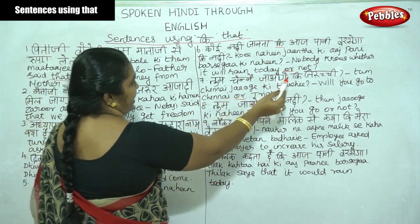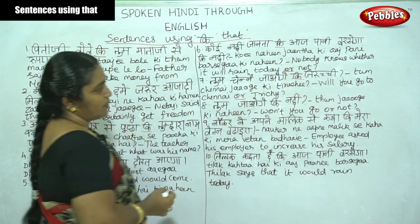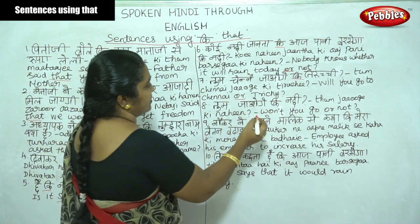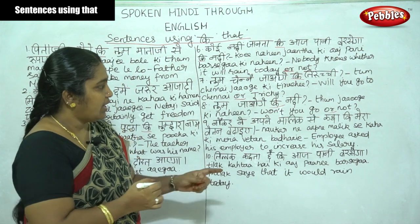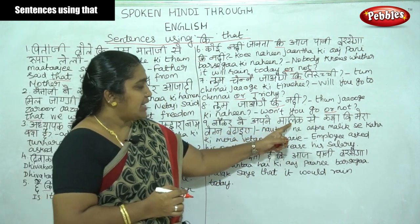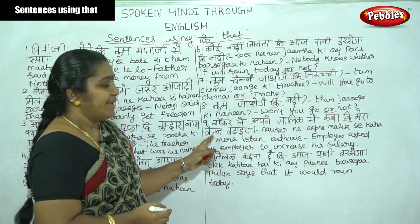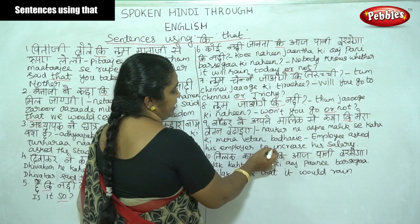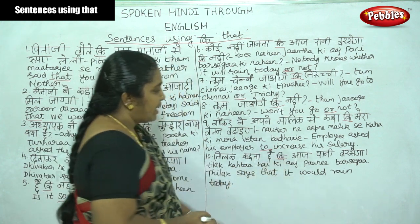Tum chennai jao ge ki tirchi — will you go to Chennai or Trichy? Tum chennai jao ge ki nahi — won't you go or not? Here 'ki' stands for 'or'. Naukar ne apne malik se kaha ki mera vedan badaiye — the employee asked his employer to increase his salary.